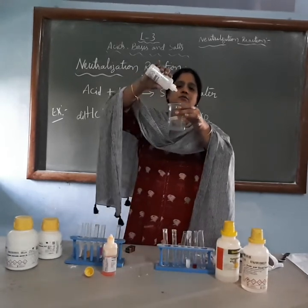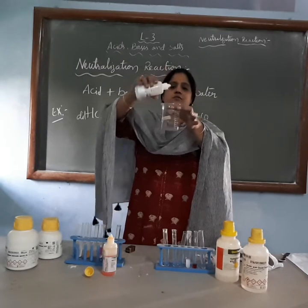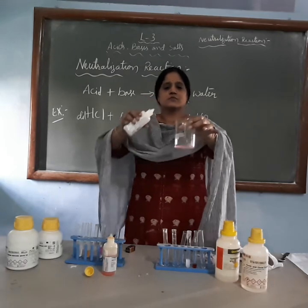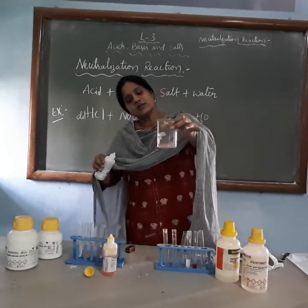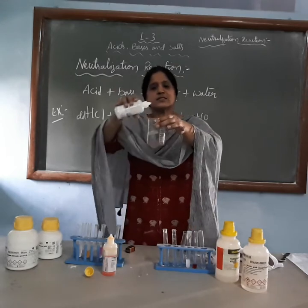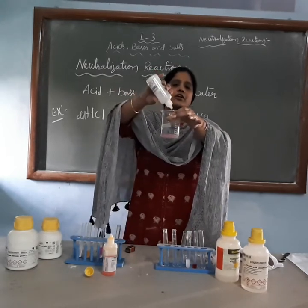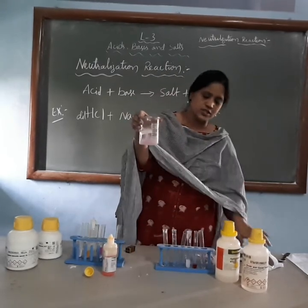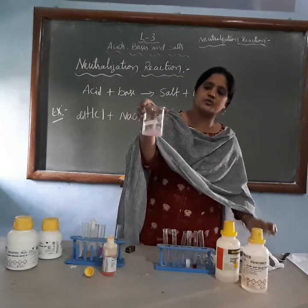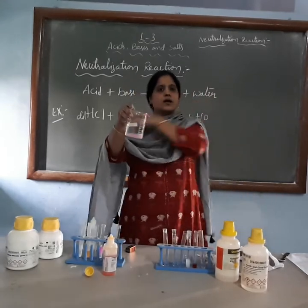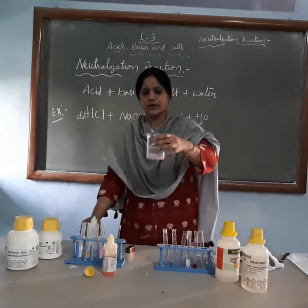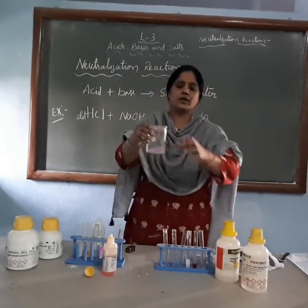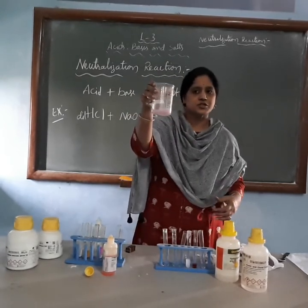Just add it drop by drop. See there is a change in the color — first it is colorless. Just if you add drop by drop the phenolphthalein indicator to a basic medium, then the solution changes into pink color. If you want more pink color, then add more quantity of phenolphthalein indicator. So it changes into the pink color.